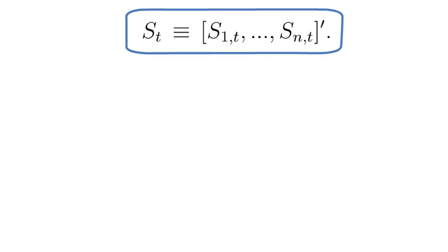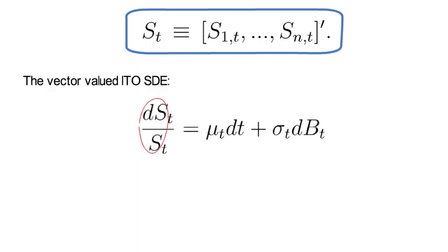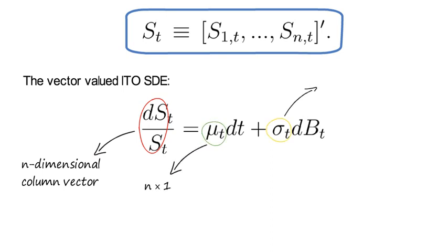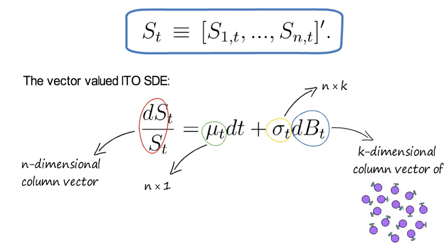The vector-valued Ito stochastic differential equation for S_t equals the following expression here. Where dS over S is an n-dimensional column vector with dS_i over S_i as its ith component. Mu_t is also n times 1 while sigma_t is of dimension n times k and dB_t is a k-dimensional column vector of Brownian motions.